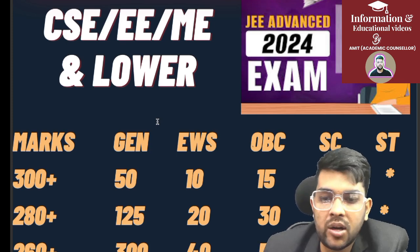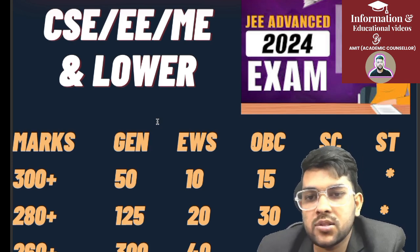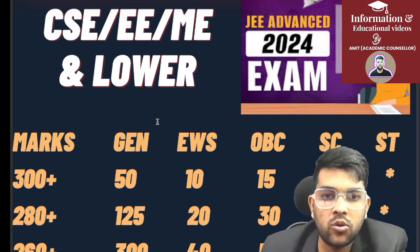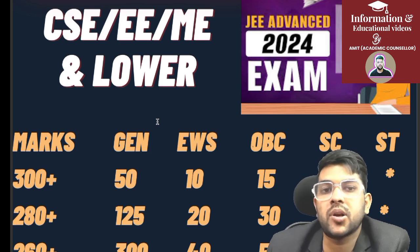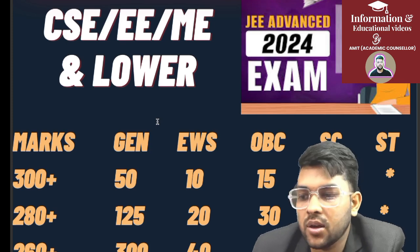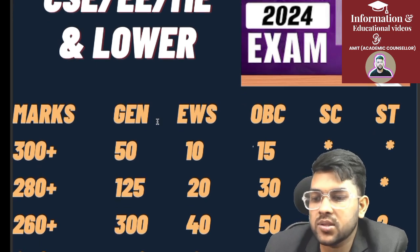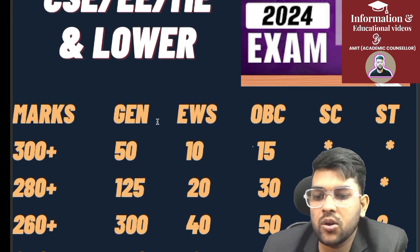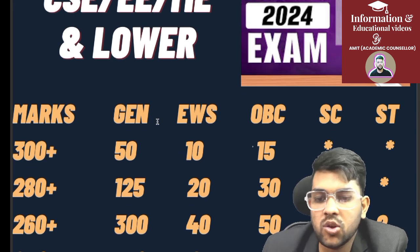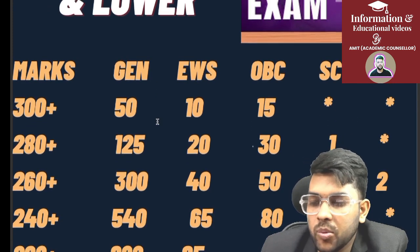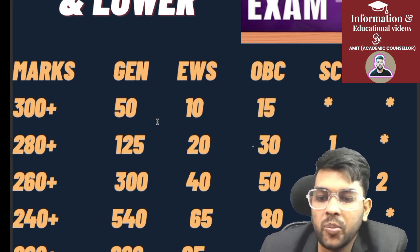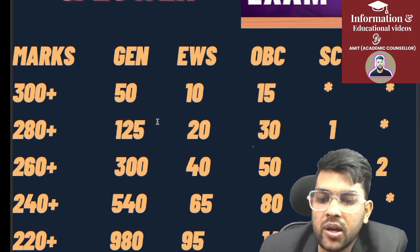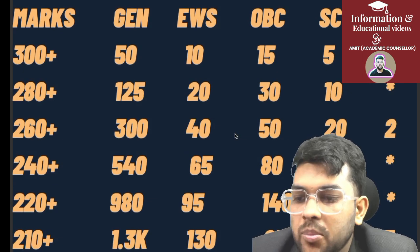All the data I'm providing is based on six years of experience and last year's official data — I have compiled everything for complete accuracy; after results you will find it 100% correct. For 260–300 marks: General rank around 300, EWS 40, OBC 50, and ST under rank 2. For 250 marks: General 540, EWS 65, OBC 80, SC rank 3.